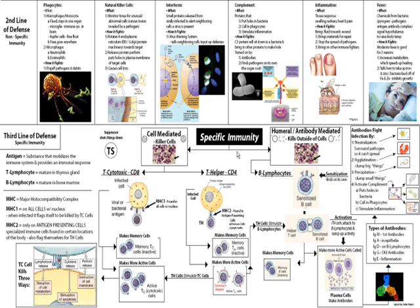So if you see a TC cell and a TH cell both responding to the same infection or the same pathogen, it's probably a large infection. It's good that the T helper cell has found that infection and is also stimulating the TC cells — essentially telling them, metaphorically speaking, that this is a big infection and they better kick it up a notch.